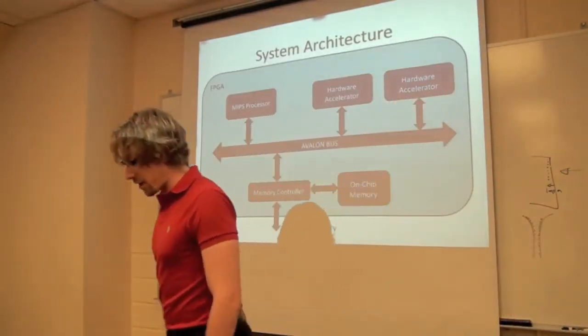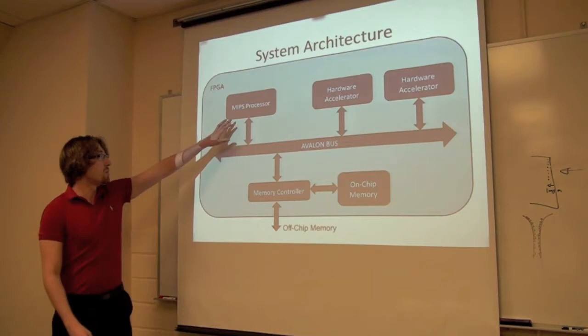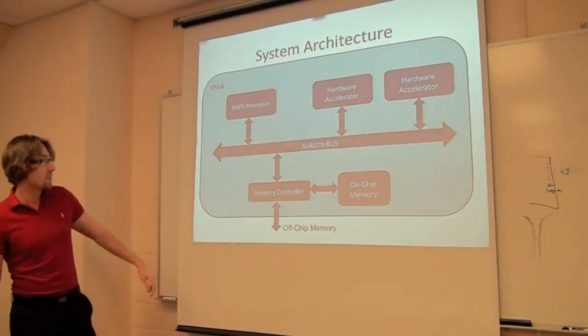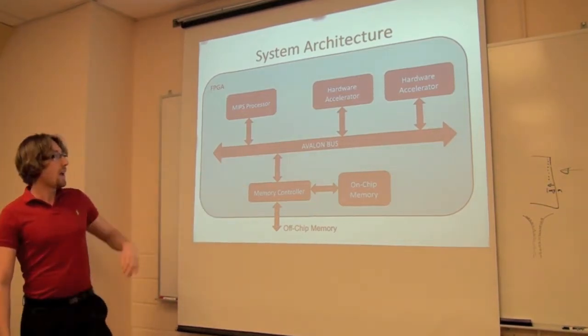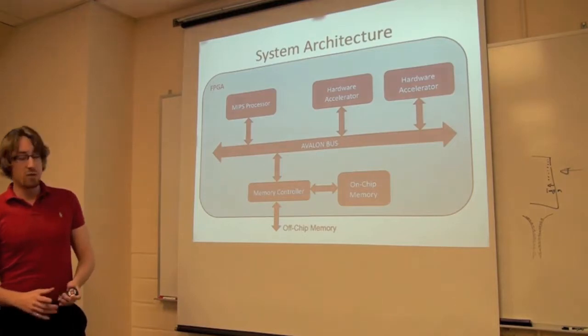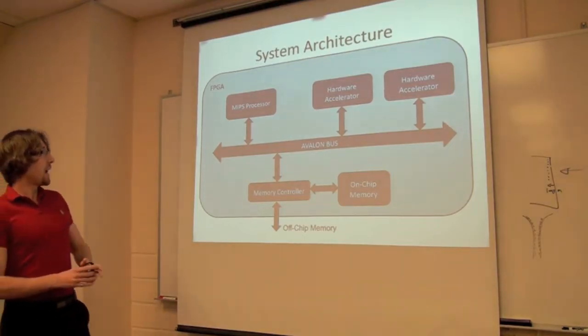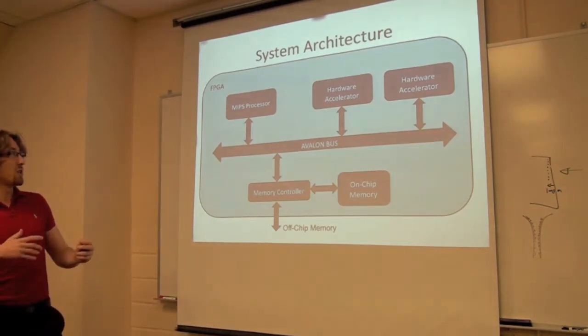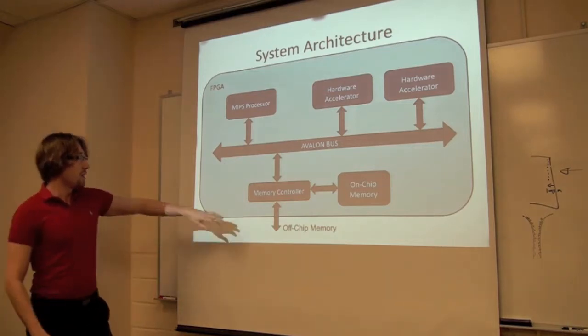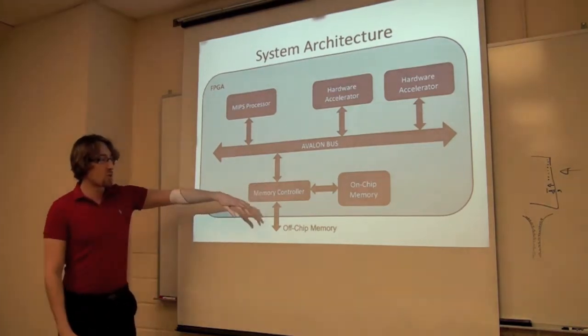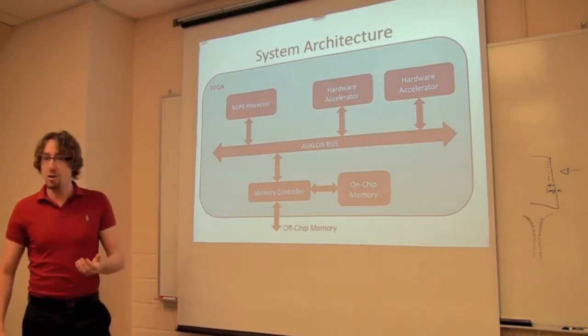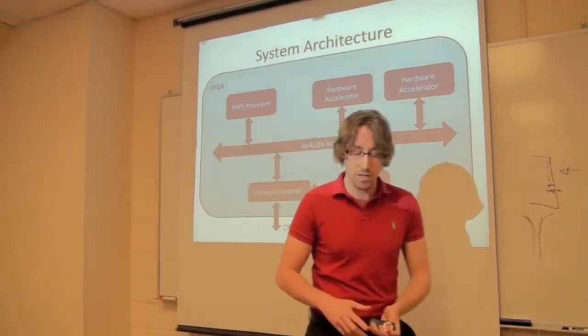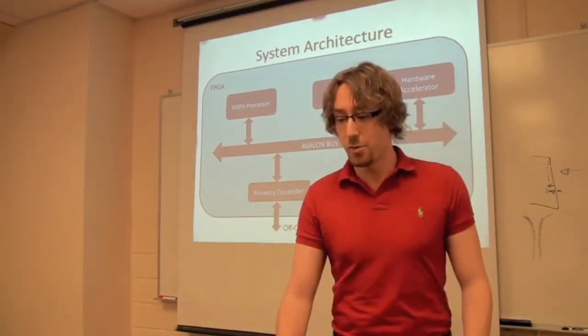So the overall system architecture looks like this. As I mentioned, you have this MIPS soft processor on the FPGA. We've been targeting Cyclone 2, so Altera FPGAs. That's connected to an Avalon bus. You have a number of hardware accelerators which represent these hardened program segments. They communicate to the processor through the Avalon bus. Sometimes you'll have global variables which need to be shared between the processor and these accelerators. So for that you need a shared memory controller which either accesses on-chip cache memory or off-chip SRAM. And I should also mention the hardware accelerators themselves have a lot of block RAMs for the local memory that's used by the hardware accelerator.